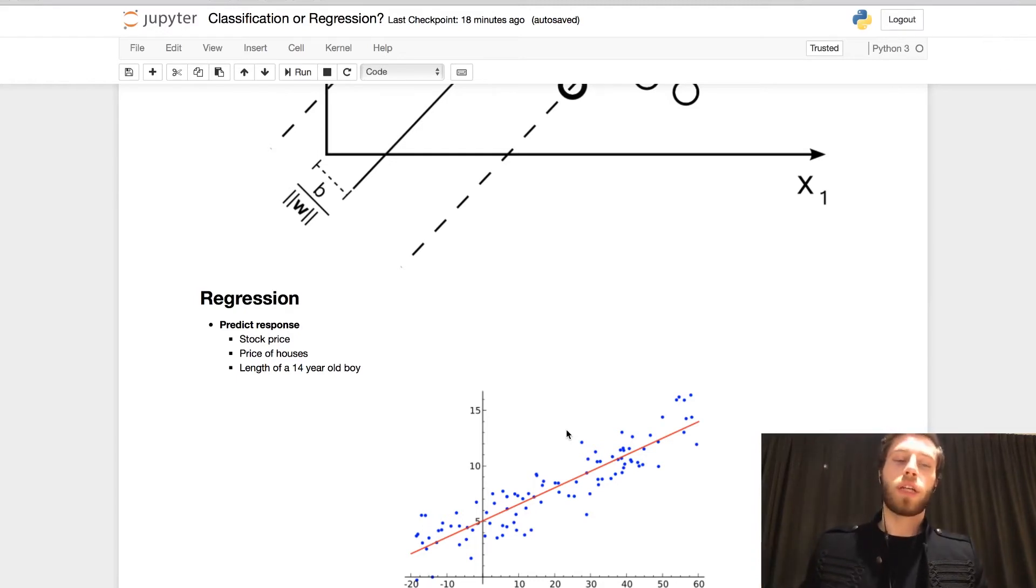Regression is when we're going to predict that response. So basically we're going to predict a stock price, the price of a house with four rooms, 12 bathrooms and one gym or the length of a 14 year old boy.